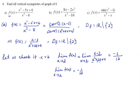Therefore, x equals 2 is not a vertical asymptote, since the limit is not infinity. So f(x) = (x squared minus 5x plus 6) over (x cubed minus 8) has no vertical asymptote, because the limit of the function as x approaches 2 is not infinity.